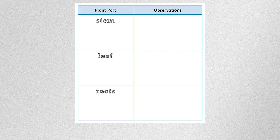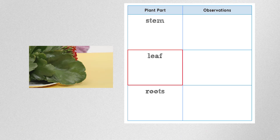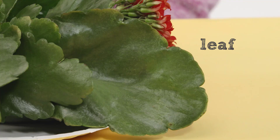Click on the leaf cell in the data table to observe the plant leaf. What is the color and shape of the leaf? Write the word leaf in the left column of your notebook and draw a picture of the leaf below the word. When you're finished, click Continue.